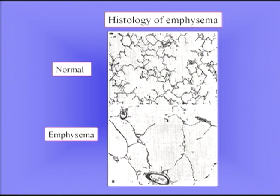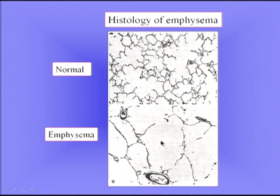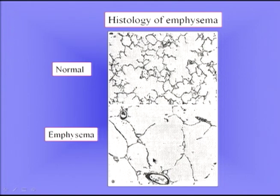The histology of emphysema is very instructive. At the top we have the histology of the normal lung — a thin lung section — where you can see the alveolar ducts and alveoli very clearly. In the lower image you can see the terrible destruction that occurs in emphysema, with breakdown of the alveolar walls. Large amounts of the capillary bed are destroyed because the capillaries run in the alveolar walls, and you can also see that these small blood vessels lack the normal radial traction of the parenchyma around them.